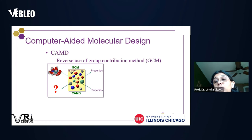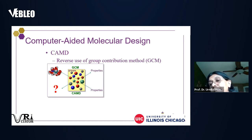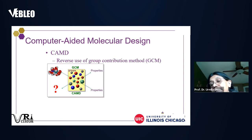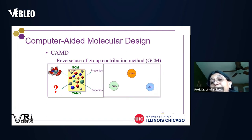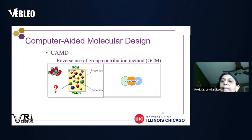Once we develop a group contribution method, we can divide molecules into groups and predict properties from those groups for the complete molecule. The reverse problem is: given desired properties, find the molecules. For example, we can predict properties of CH₃CH₂OH from CH₃, CH₂, and OH contributions, and use that to design new molecules.